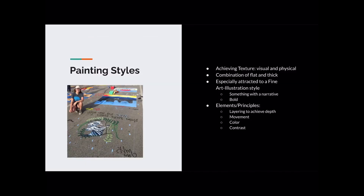Now I'm going to go through some techniques that I like to use. First, painting styles. Achieving texture is super important to me when I'm painting — that visual and physical texture combined on my canvas, that combination of flat blending and thick application. I love it. With this style, I'm especially attracted to fine art illustration — something with a narrative, something that's bold. The elements and principles I'm usually led to as I go along are layering to achieve depth, movement, color, and contrast.